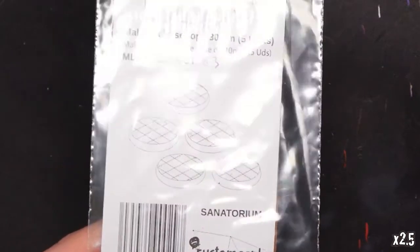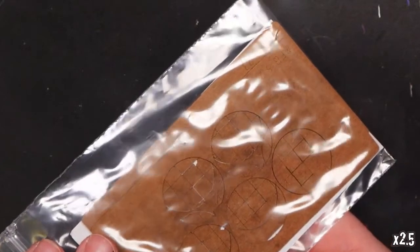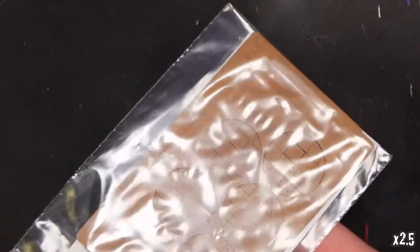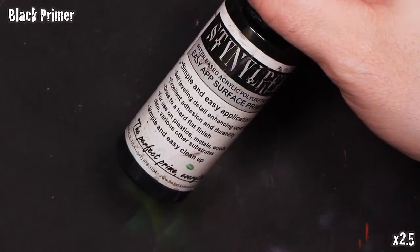If you're wondering what these are, these base toppers are from a company called Custom Meeple. They are laser cut cardboard inserts that go in the tops of the bases that come with Malifaux minis. To get started, we're going to prime all of our bases with some Stynylrez black primer from Badger.